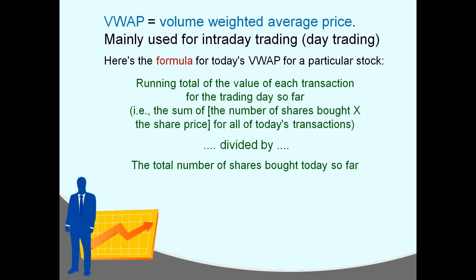Basically what it is: today so far, during the trading day, all of the transactions — every tick, every price movement in a stock — means that there was a buyer. Somebody bought some stock, and somebody was on the other end of that transaction who sold it. They bought a certain number of shares at a certain price. If you take the number of shares times the price, that's the total value of that transaction. If you add all those up — the value of all the transactions today so far — that would be in the numerator of this fraction. In the denominator would be the total volume for the day so far, the total number of shares traded today so far.